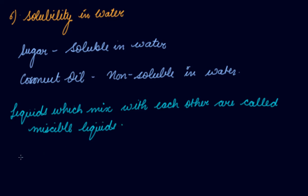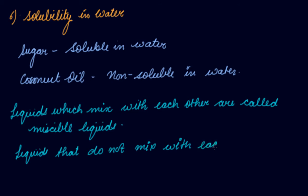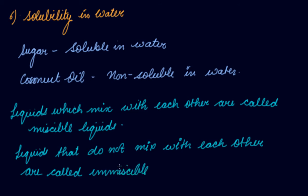Liquids that do not mix with each other are called immiscible liquids. There are also some gases, like oxygen and carbon dioxide, that get dissolved in water. Aquatic life breathes oxygen dissolved in water, while plants use carbon dioxide dissolved in water. Nitrogen, however, is not soluble in water. So some gases are soluble in water and some are not, and matter can be classified on the basis of its solubility in water.